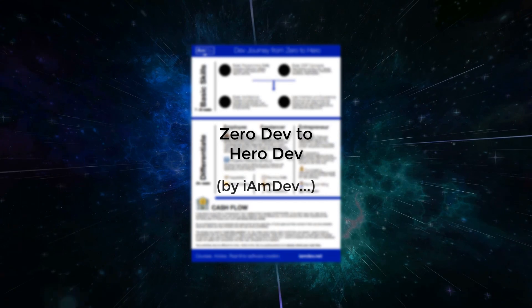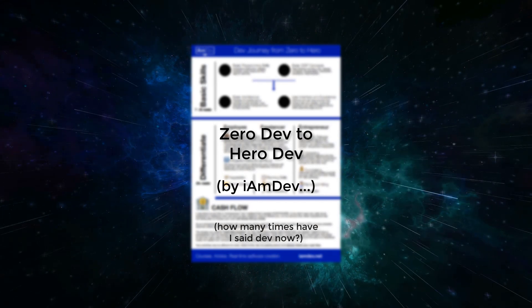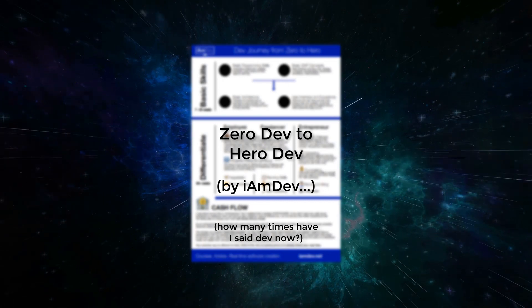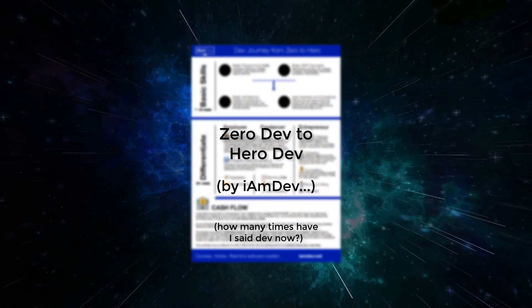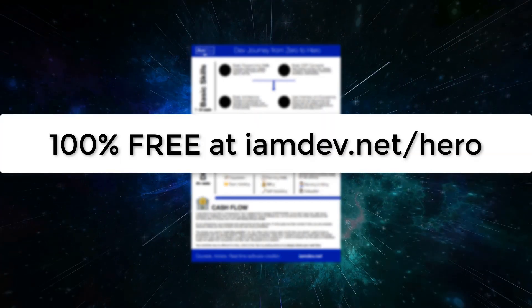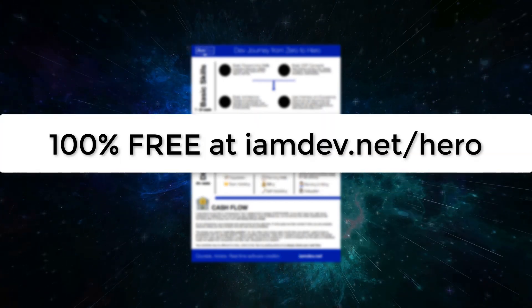It outlines top level skills you need to become an employee, freelancer, entrepreneur or any mixture of the three. If you want a map to success, then this guide is what you're looking for. Get it for free at iamdev.net/hero.